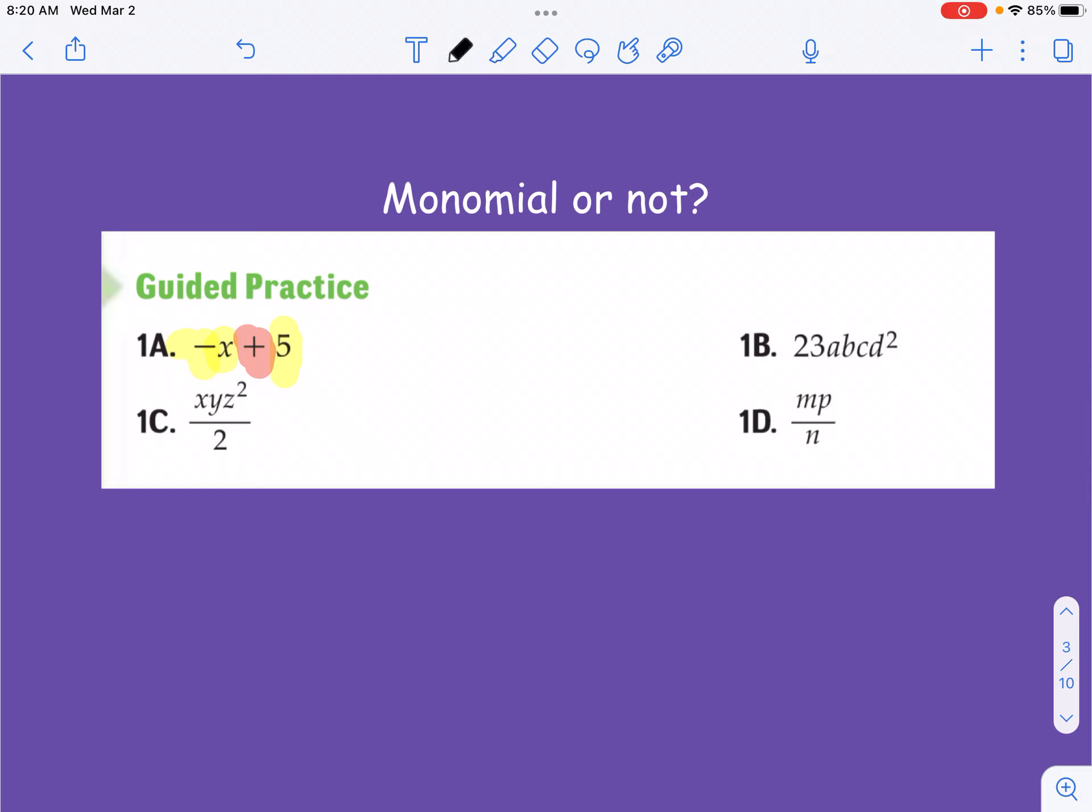So we've got addition going on, so it's not a monomial. It's actually two separate terms is what you've got here. You've got this, which is a monomial, and then you've got 5, or positive 5, which is another monomial. And so you have a sum of monomials there, but it's not a monomial in and of itself.